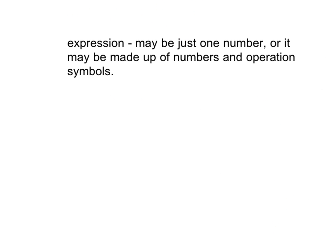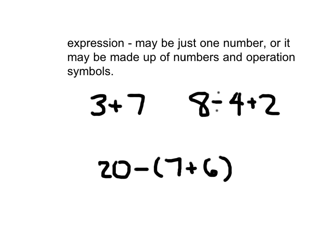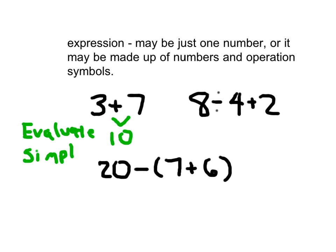Here's some vocabulary for you. Please take a moment to go ahead and copy it down — hit pause to copy this down. An expression. I've written down some expressions. What we're going to do is evaluate — to evaluate or to simplify these expressions. 3 plus 7 would be a lot simpler if someone had just written 10. So we've got this operation with parentheses: 20 minus 7 plus 6. The parentheses tell us what to do first: 7 plus 6 is 13, and then 20 minus 13 evaluates to 7.